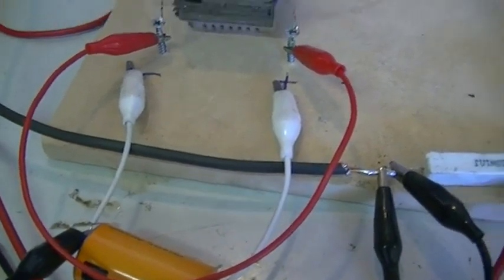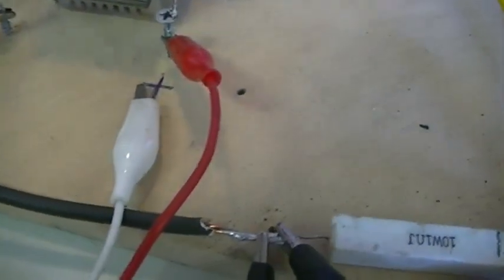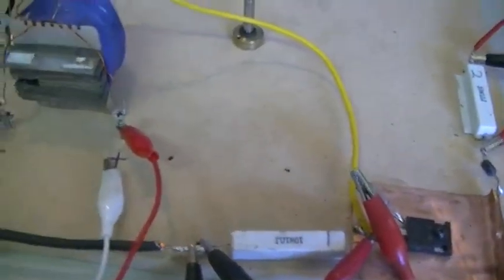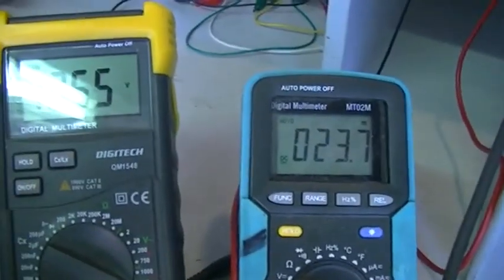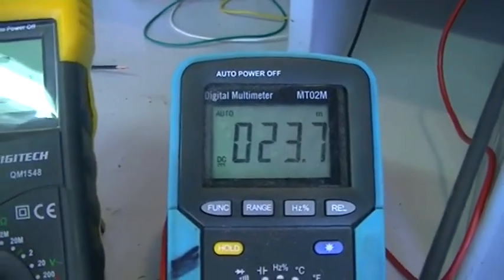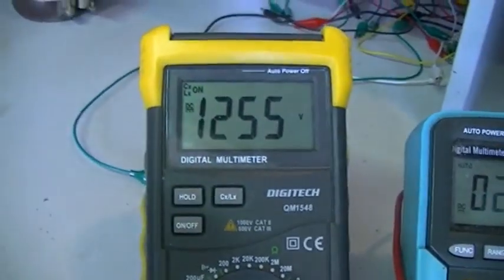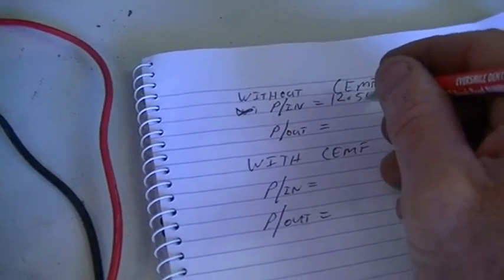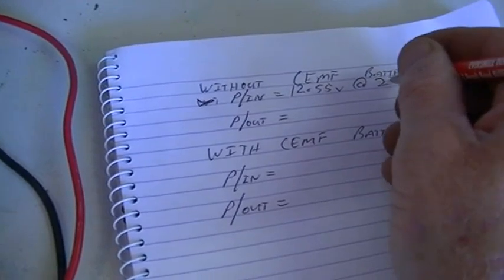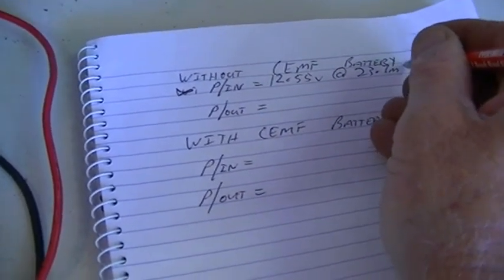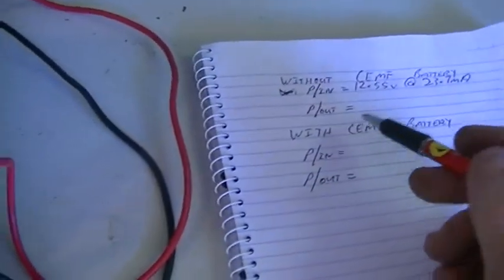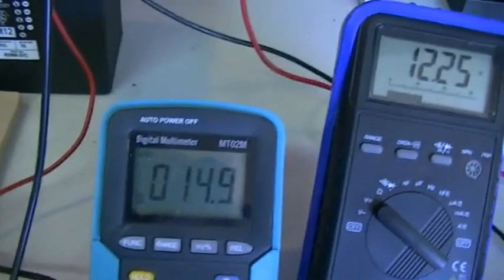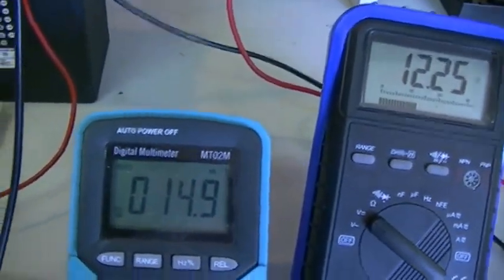Then we'll introduce our counter EMF battery into the system, which at the moment has 0.935 volts. We'll see what happens to the power in and the power out and also the voltage across the battery. Alright, so click on the function generator, fire the system up. At the moment you can see we're using 23.7 milliamps with 12.55 volts. So I'm going to write that in: 12.55 volts at 23.7 milliamps.